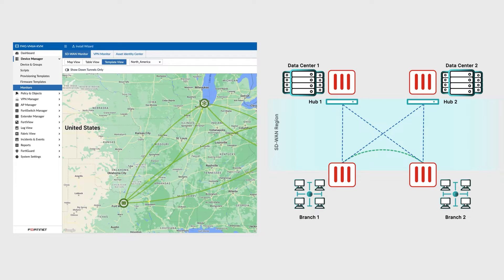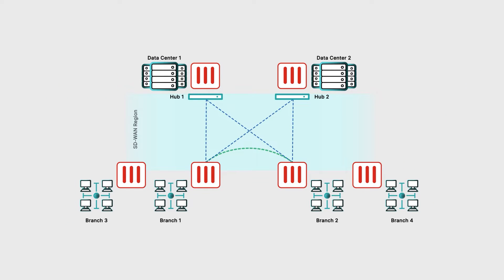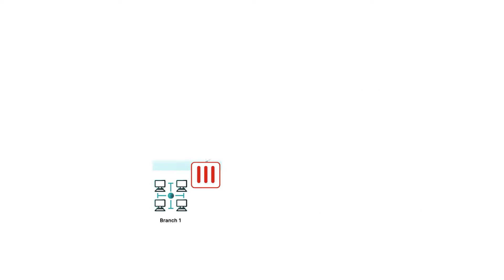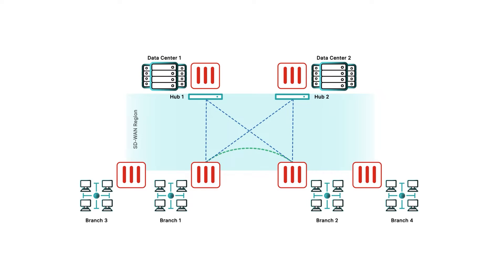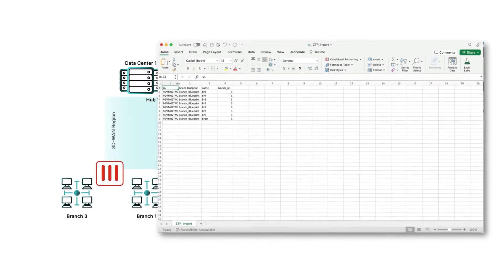In this video, we will be demonstrating how to onboard new devices to our SD-WAN region using zero-touch provisioning. First, we will onboard a single FortiGate, and finally, we will onboard multiple FortiGates simultaneously by importing them from a CSV file.